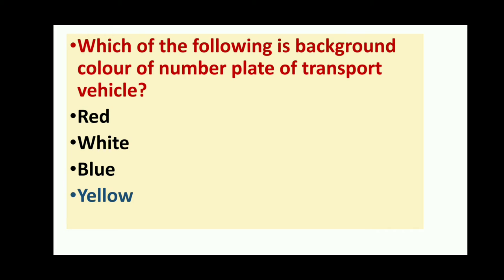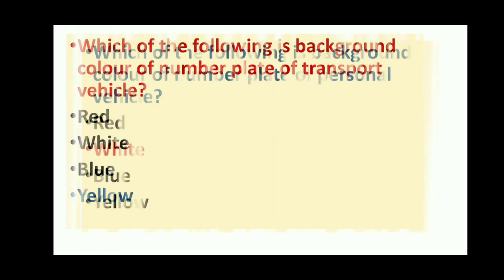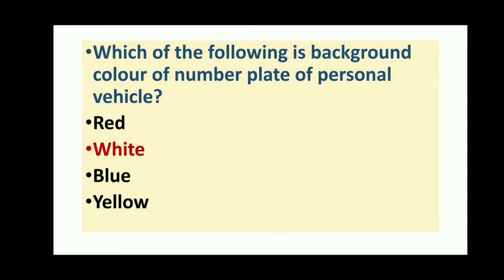Which of the following is the background color of the number plate of a transport vehicle? The background color is yellow. Which of the following is the background color of the number plate of a personal vehicle? The background color of a personal vehicle number plate is white.